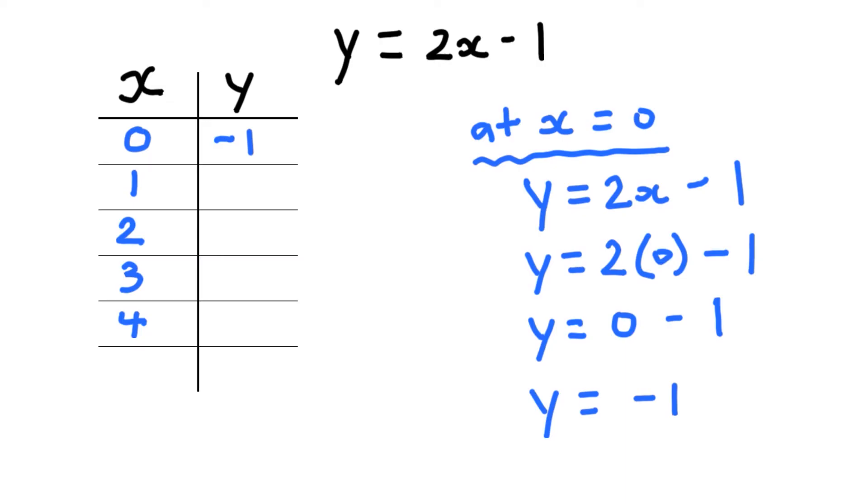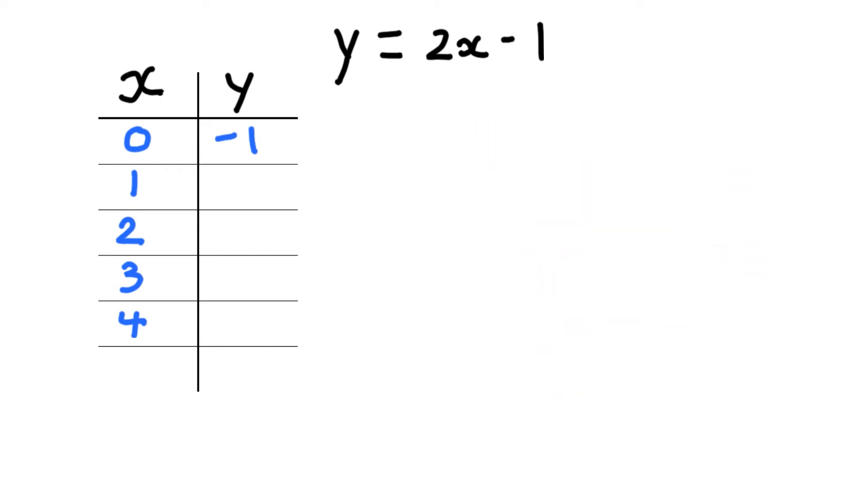Now one thing I want to point out is if we had a different equation, let's say we had y equals 5x plus 10, then the y value at x equals 0 might not be negative 1. It might be something else. But for this equation, whenever you have x is equal to 0, y has to be negative 1. So that's the first pair in our chart. Now I've got to keep on filling this out. So instead of at x equals 0, I now have to do at x equals 1.